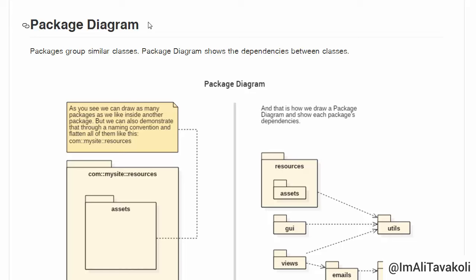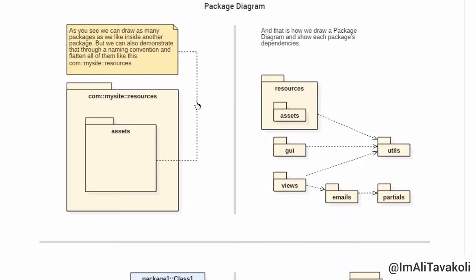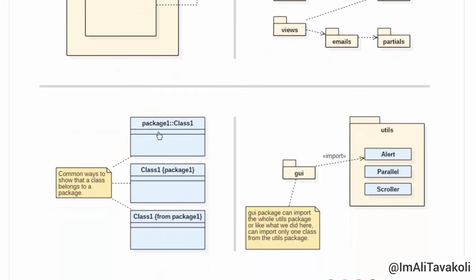A package diagram shows the dependencies between classes. Here is an example of a package diagram — here is a package and another package inside of it. We're showing the packages and their dependencies, how a class belongs to a package, and how a package depends on another package or a class inside of another package.